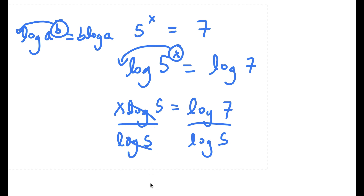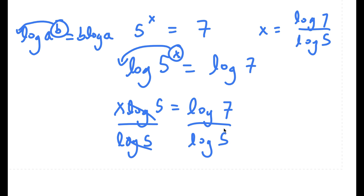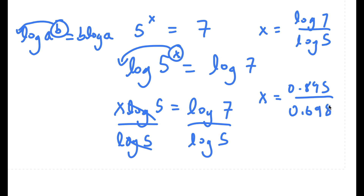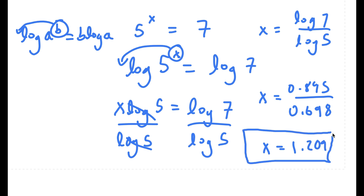The log 5 terms cancel out, leaving x is equal to log 7 over log 5. Log 7 is approximately 0.845, and log 5 is approximately 0.698. So log 7 over log 5 is approximately equal to 1.209. So x ≈ 1.209 is my answer.